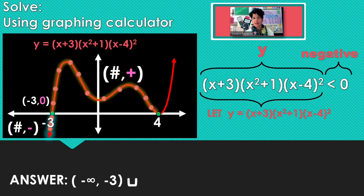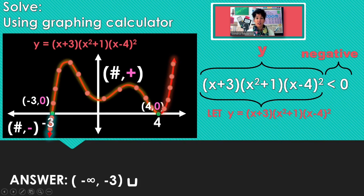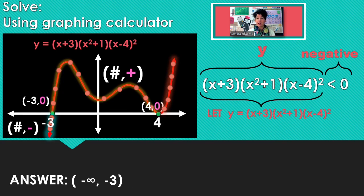So the only x-values that are going to generate a negative y-coordinate are before negative 3. We are not including negative 3 because it generates a y-coordinate of 0. So our final answer there is just negative infinity through negative 3.